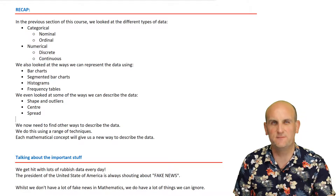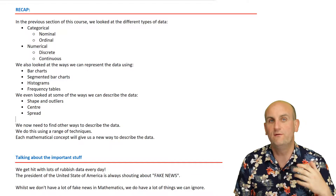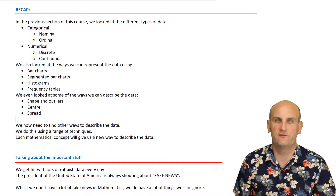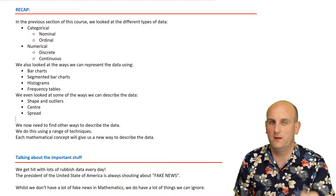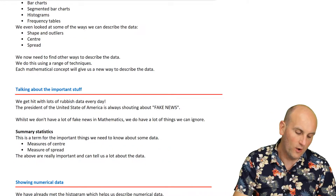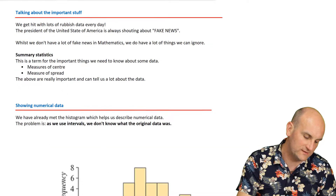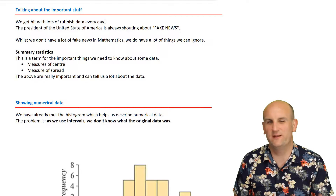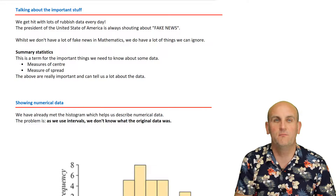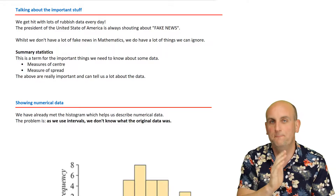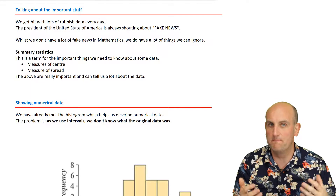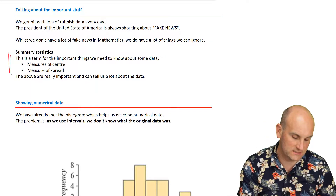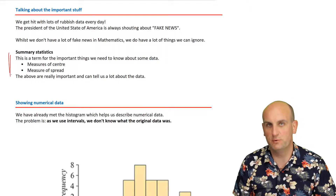We've looked at shape and outliers — things like symmetrical, positively skewed, negatively skewed — and what outliers are. We've looked at centre, how to find the median value, and the idea of spread. This chapter is really about summary statistics, which is the term for those important measures of centre and measures of spread.